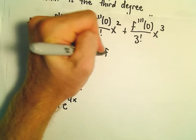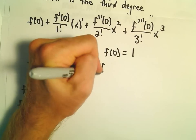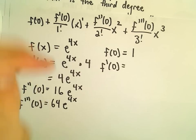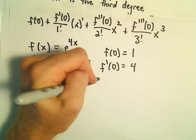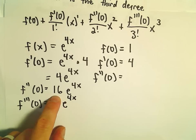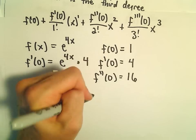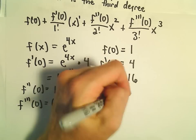When we plug in 0, f(0) equals e^0, which is 1. f'(0) equals 4 times e^0, or just 4. f''(0) will be 16 times 1, or 16. And f'''(0) will be 64.